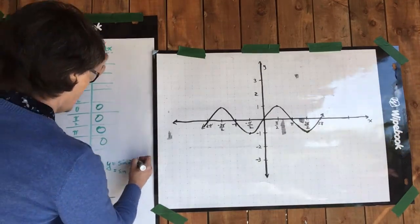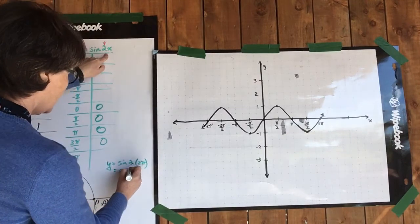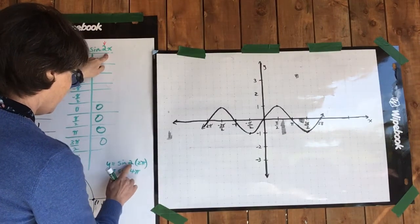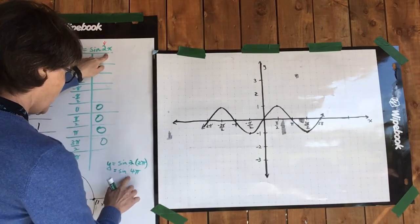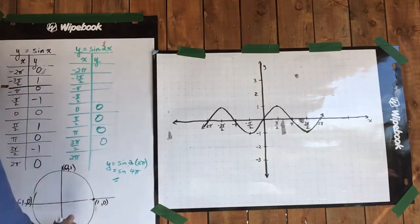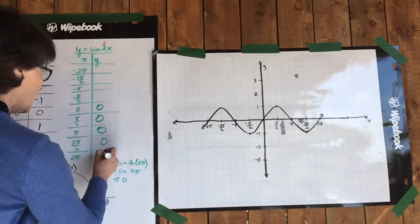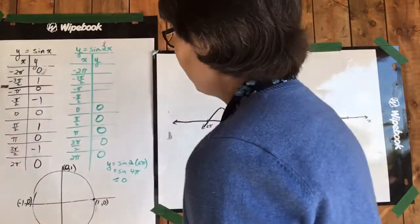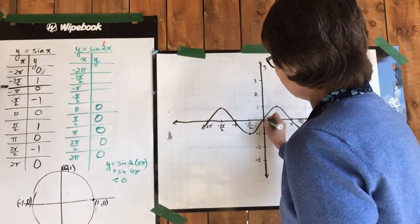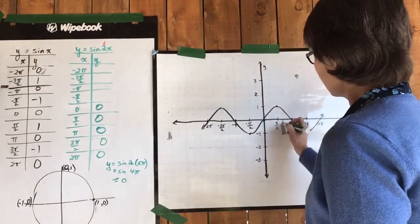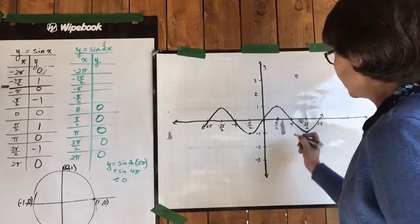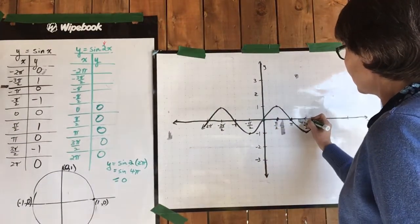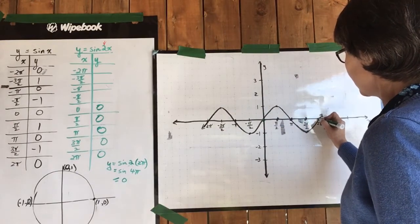Sine 2 times 2 pi is the sine of 4 pi, which is two rotations around the circle, again bringing us back to zero. Let's put these points on our graph: zero zero, pi over two and zero, pi and zero, three pi over two and zero, and two pi and zero.